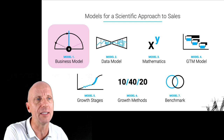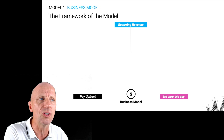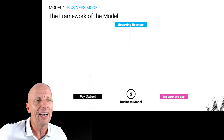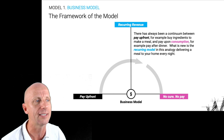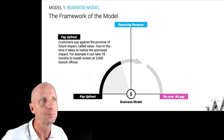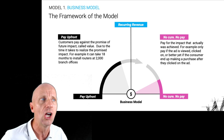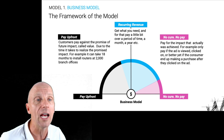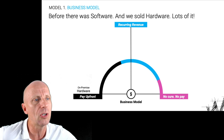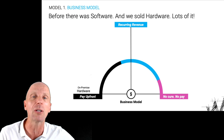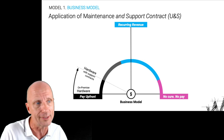Now first, I want to walk you through the different business models. What you see here is a horizontal axis: pay upfront compared to no cure, no pay. Pay upfront — think of that as hardware you're going to buy. No cure, no pay — think of that as an ad you're placing and only pay for when placed. In the middle, we have recurring revenue. On the left, pay upfront services; on the right, no cure no pay; in the middle, recurring revenue services.